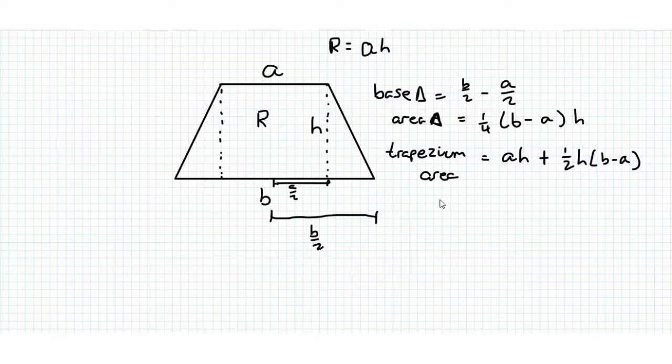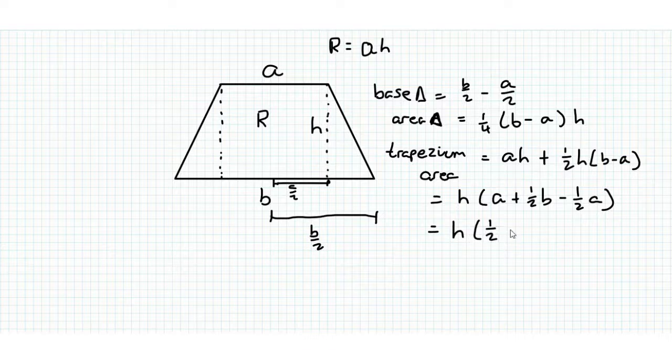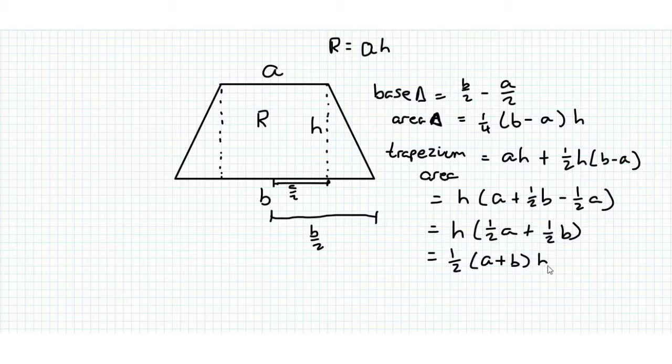We've got a common factor of H, so we'll draw that out. Now we've got H times A plus one half B minus one half A. That's equal to one half A plus one half B, which equals one half times A plus B times H.